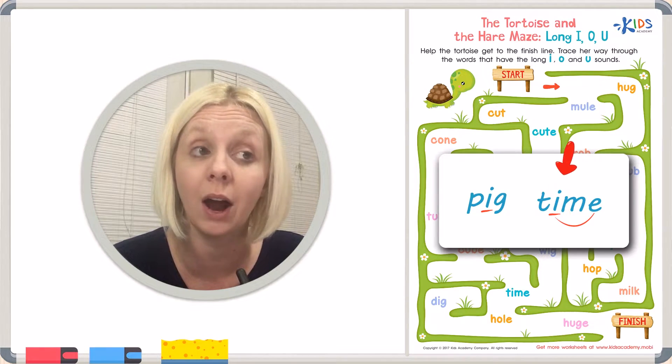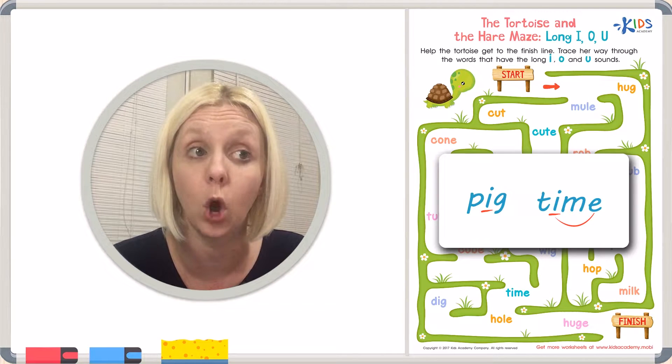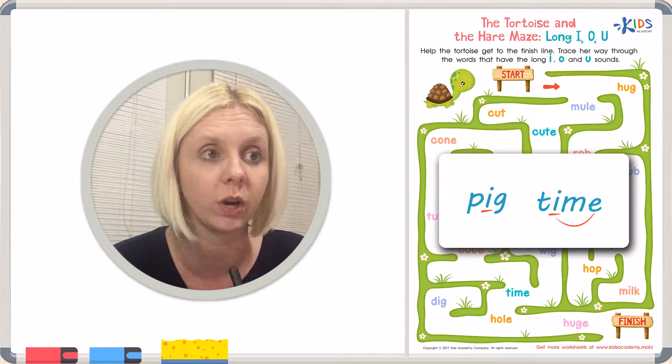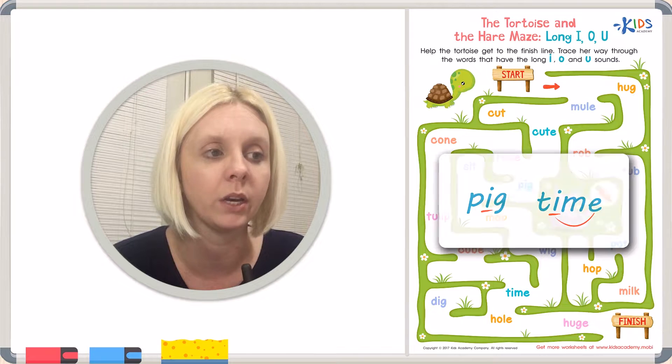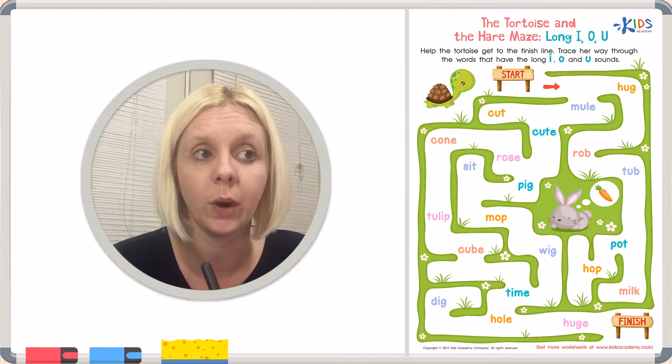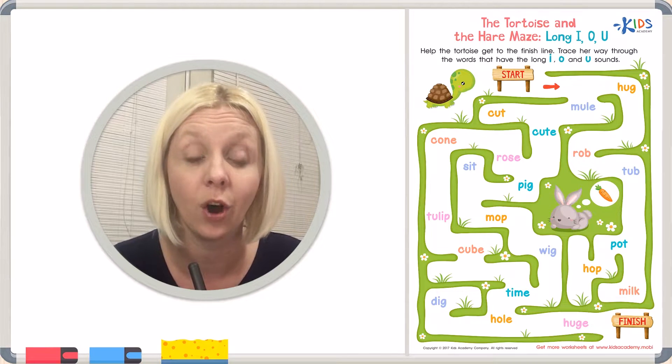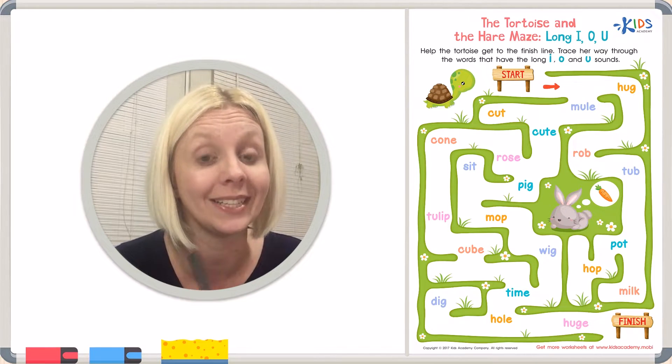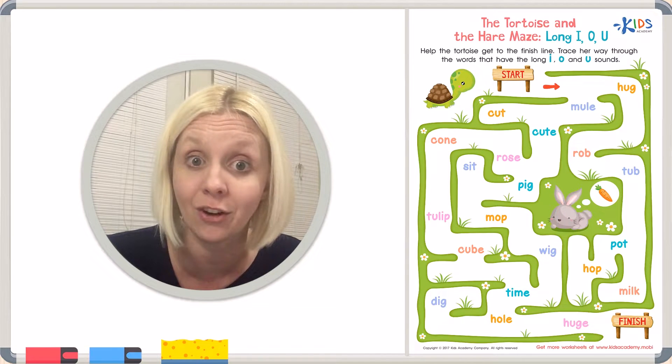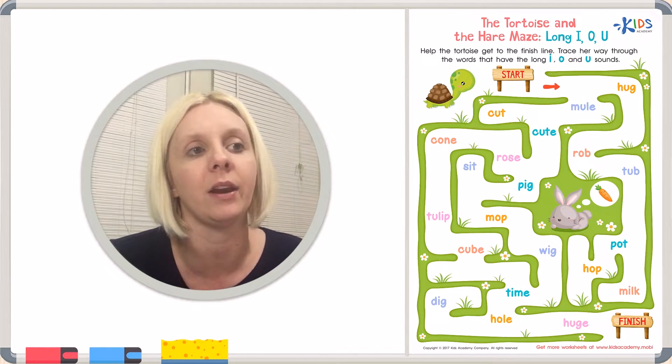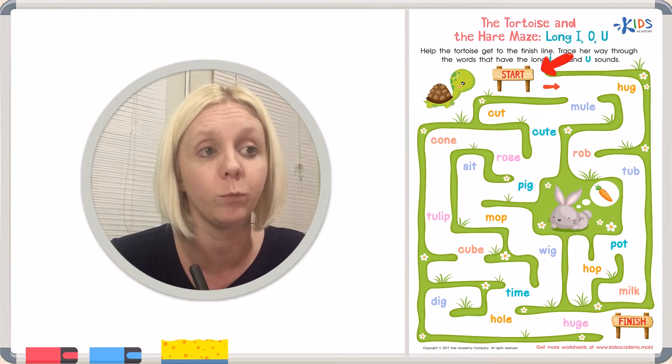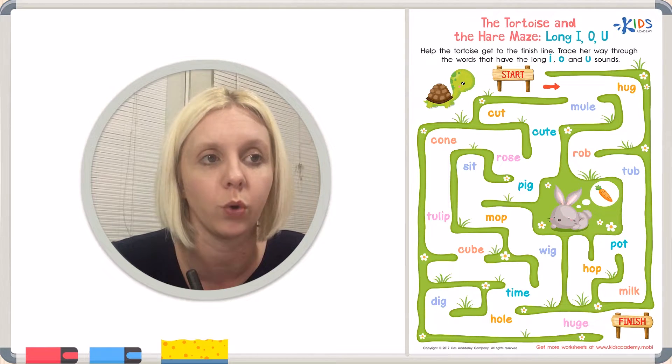But we're looking for it not only with I but also with O and U. That's what the directions say over there. So I'm gonna go ahead and erase this, but I want to show you as we go through here and I want you to really listen to the vowel sound and often the E at the end is the one that we're looking for because E always helps our vowels say their name. So let's go ahead and get started. We're gonna start up here where it says start. We're gonna help our tortoise through our maze.